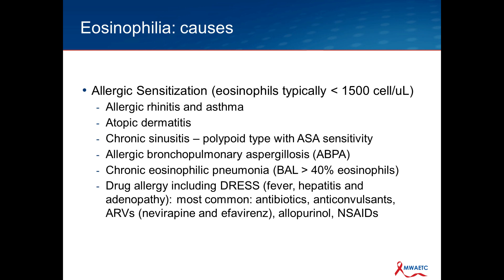With allergic sensitization, the eosinophil count is typically less than 1500. Common conditions include allergic rhinitis, asthma, atopic dermatitis, or chronic sinusitis associated with nasal polyps seen in people with aspirin hypersensitivity. ABPA is associated with elevated eosinophils, as is chronic eosinophilic pneumonia — BALs need to be greater than 40% eosinophils for that classification. Drug allergies including DRESS, with common offenders being antibiotics, beta-lactams, anticonvulsants, older ARVs like efavirenz and nevirapine, allopurinol, and NSAIDs.